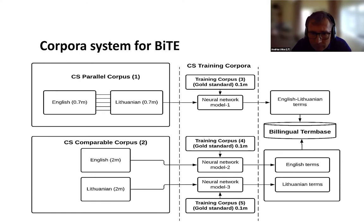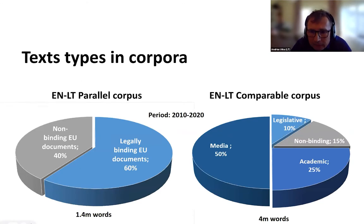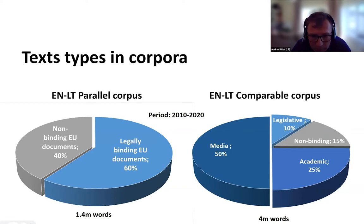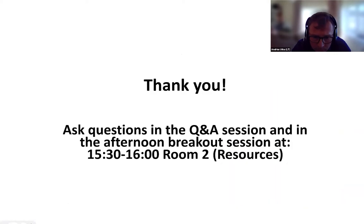Here you see the scheme of the corpora that will be uploaded to the CLARIN repository, numbered one through five: a parallel corpus, a comparable corpus, and training corpora three, four, and five. The text types in the comparable corpus are more diverse — in the parallel corpus we have legally binding EU documents such as decisions and regulations, plus recommendations and reports as non-legally binding documents. In the comparable corpus we also get media files and academic files in addition to the legal material, giving us a bigger corpus of around four million words compared to about 1.4 million for the parallel corpus.